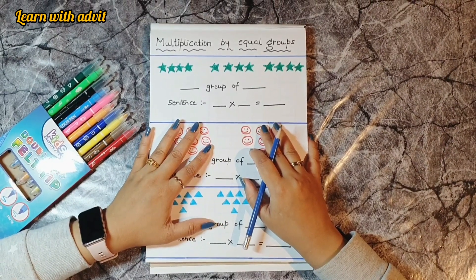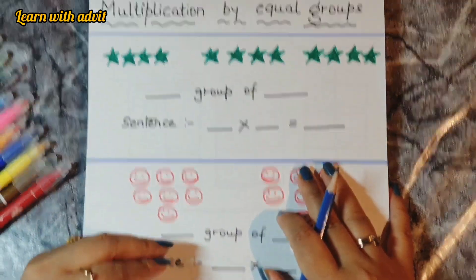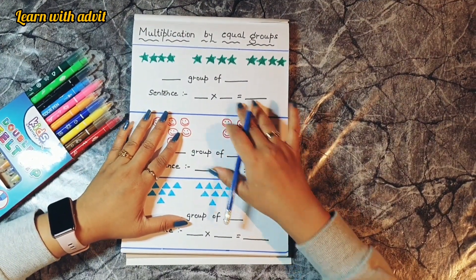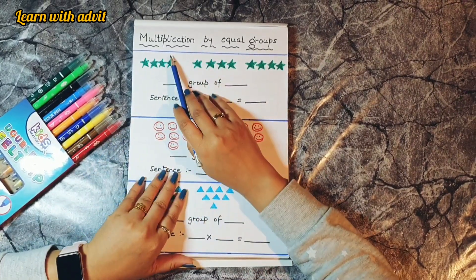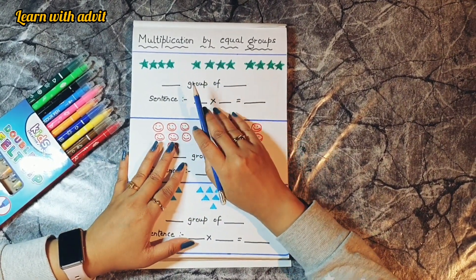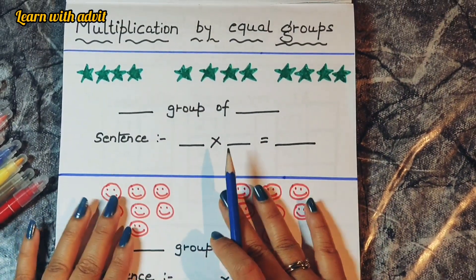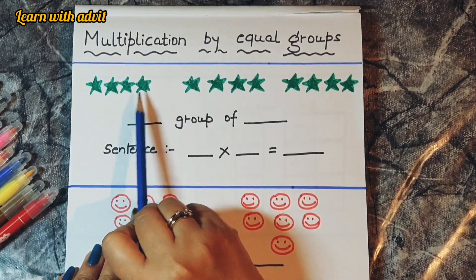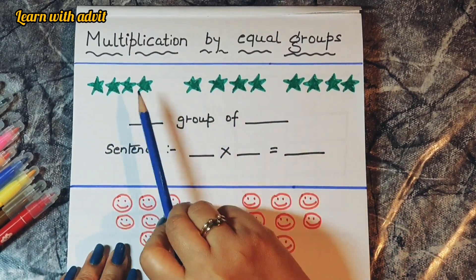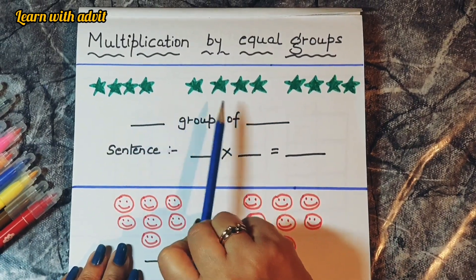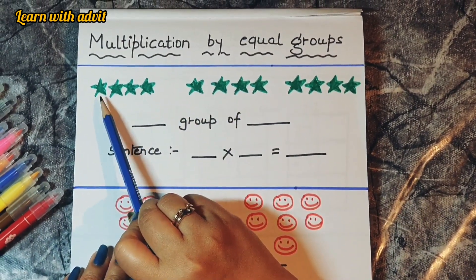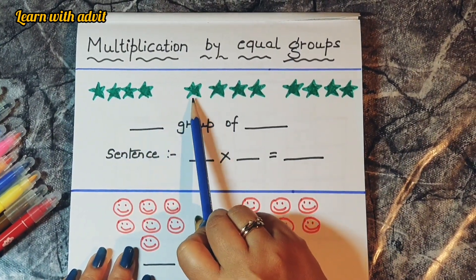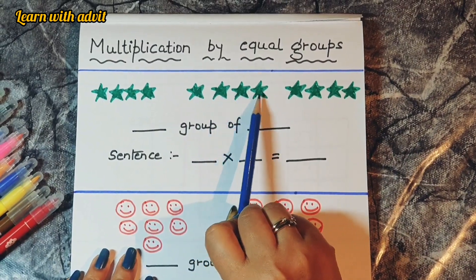I have taken some quick maths worksheets. The first sheet is for multiplication by equal groups — it's very easy to learn multiplication. Kids need to check how many shapes are in one group so they can identify and multiply them. In the first group we have one, two, three, four stars; in the second group also one, two, three, four.